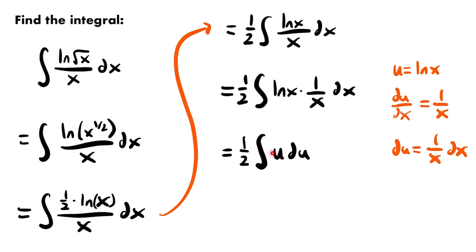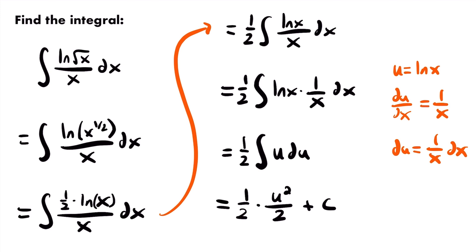Now we have a very simple integral. Using the power rule of integration — adding one to the power and dividing by the new power — this equals one-half times u-squared divided by two, plus C. Because this is an indefinite integral with no bounds of integration, we must include the constant of integration C. Simplifying and substituting back u equals the natural log of x, the final answer is the natural log of x squared, divided by four, plus C.